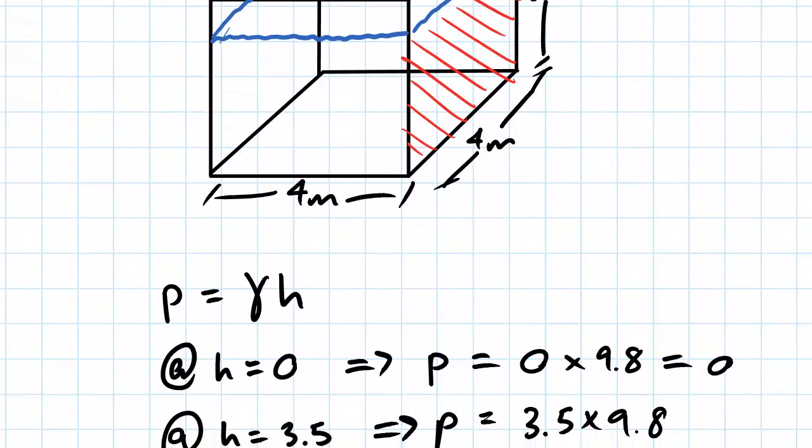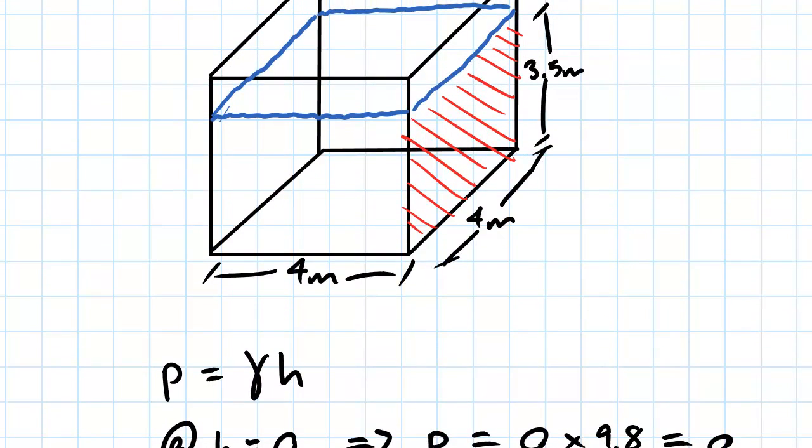So we'll start off by just looking at the gauge pressure formula. Gauge pressure is just equal to the density of water multiplied by the acceleration due to gravity, multiplied by the height of the water on top of it.